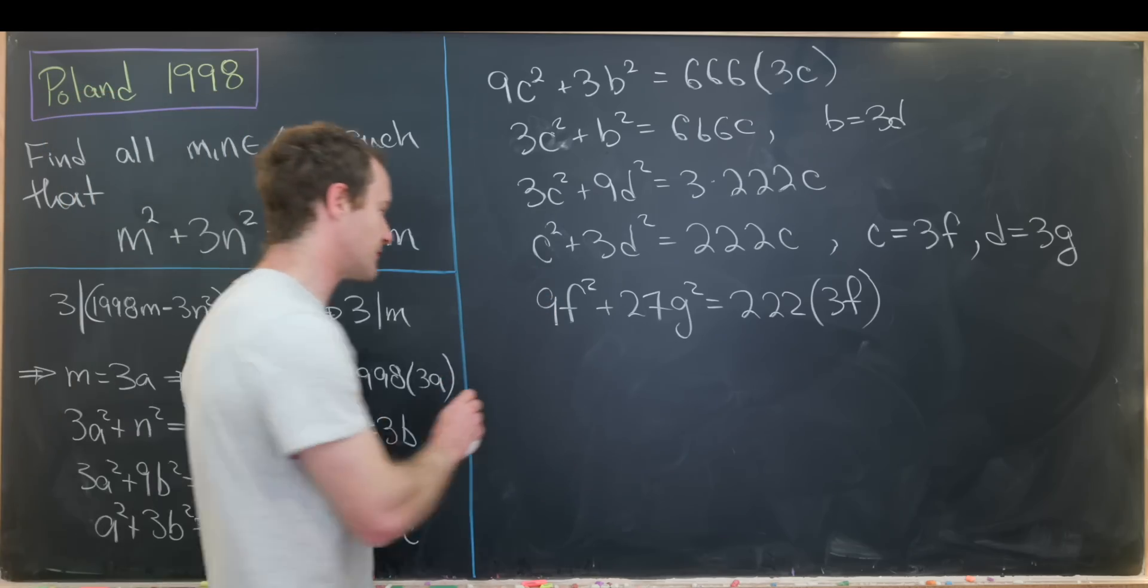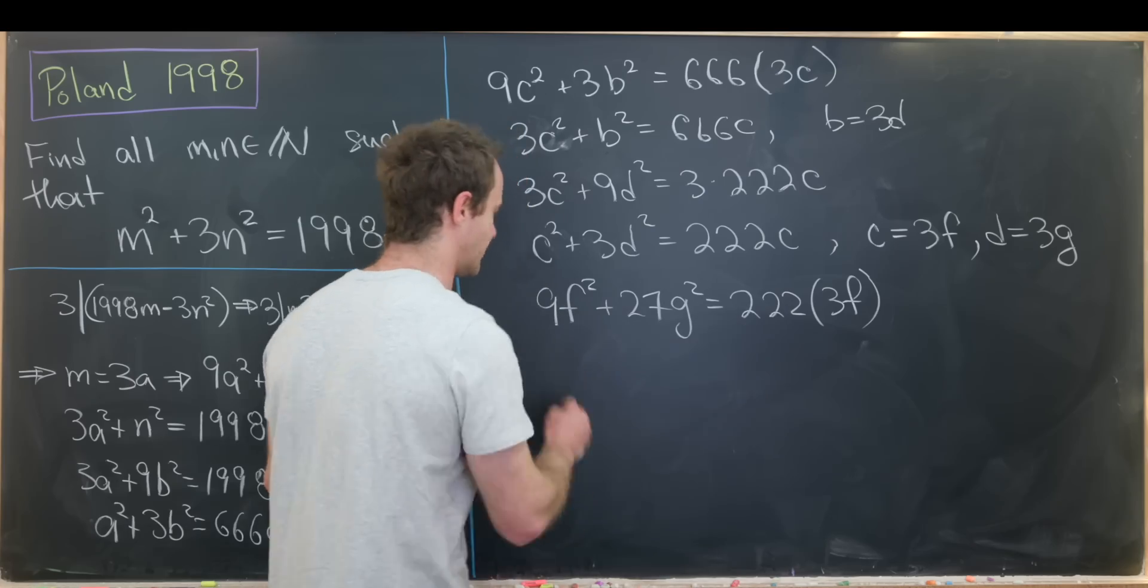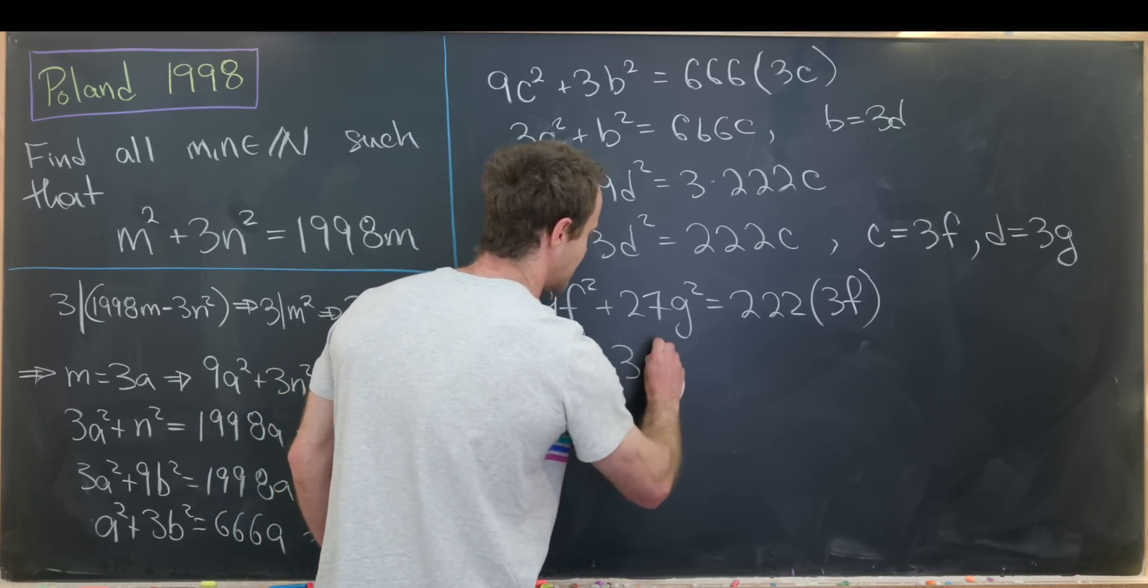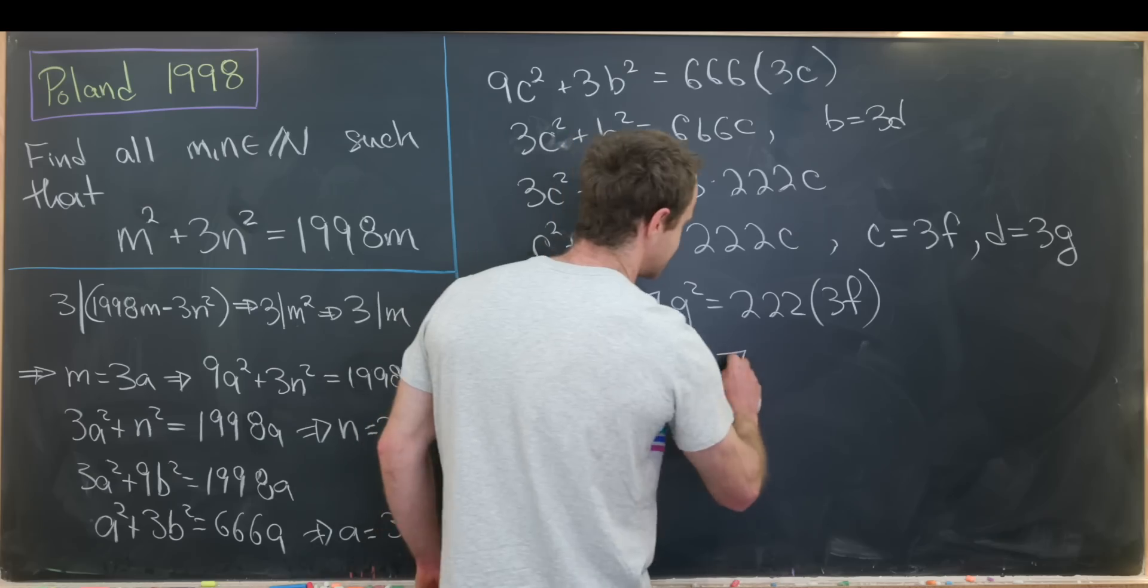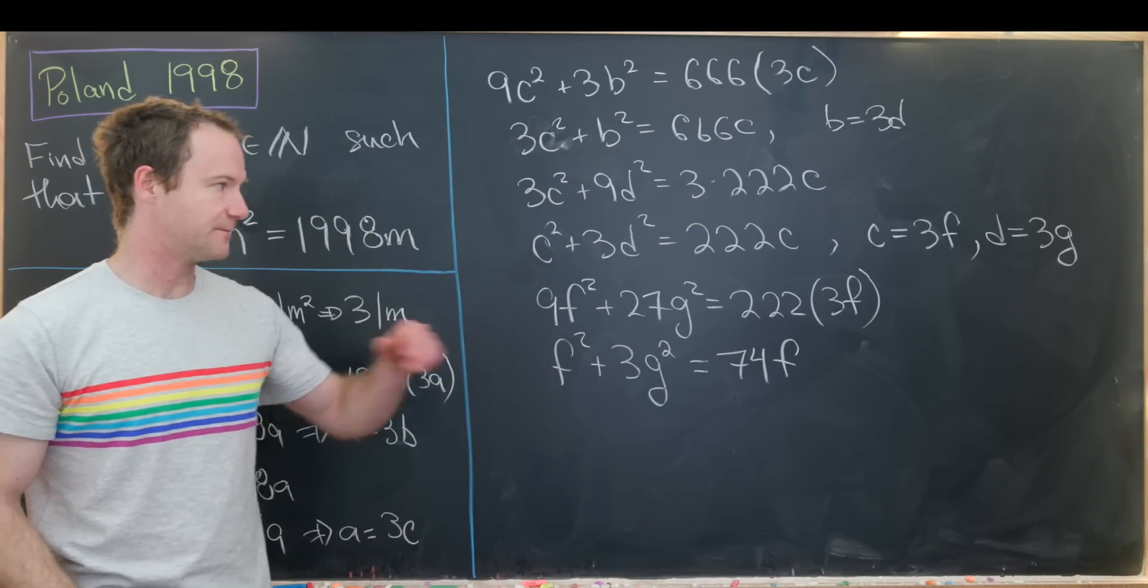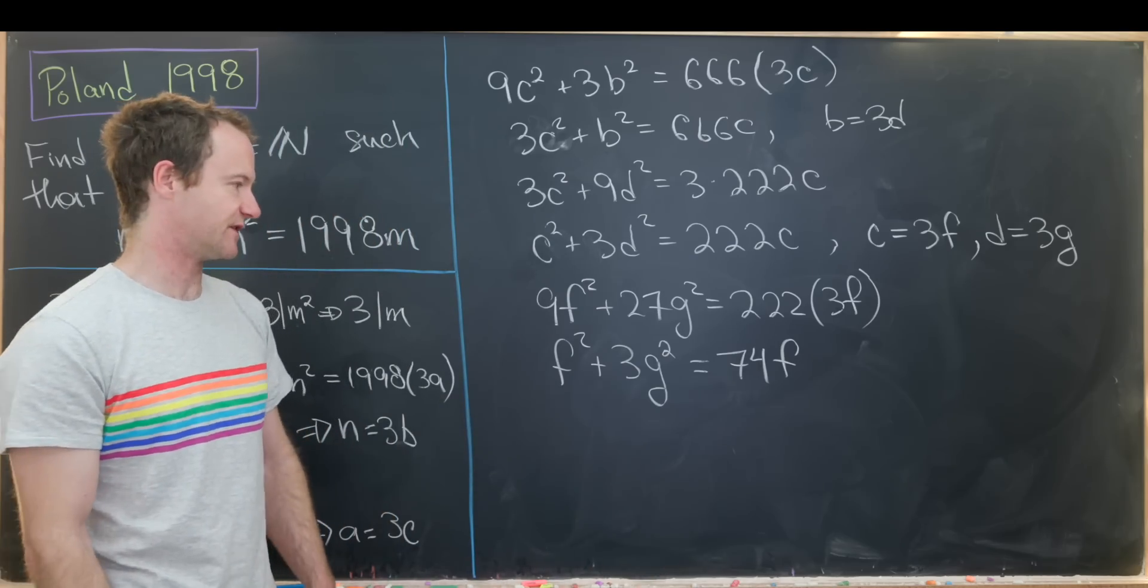Now we can cancel 9 from this, because 222 is divisible by 3. That leaves us with f squared plus 3g squared equals 74f. So dividing out the 3 from this term just cancels, dividing out the 3 from 222 gives us 74.